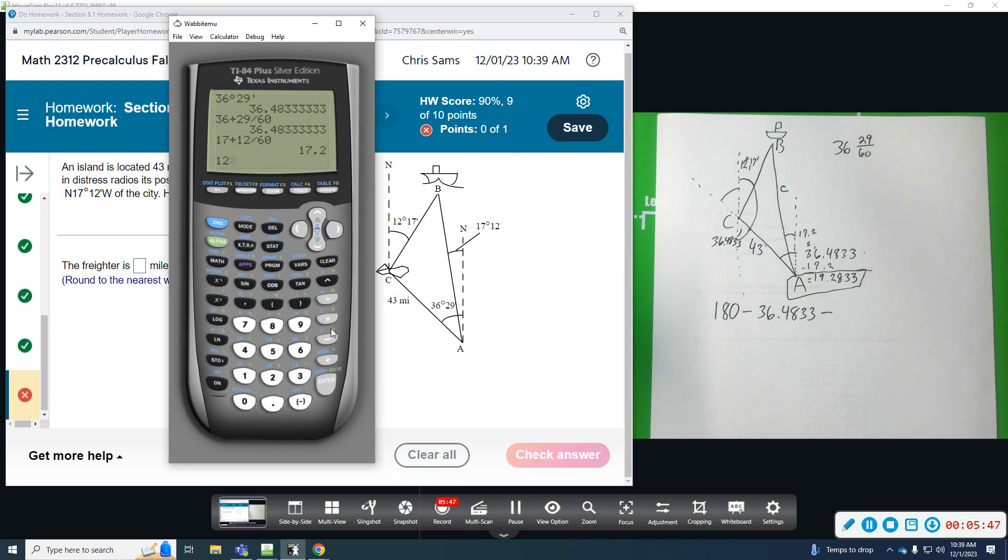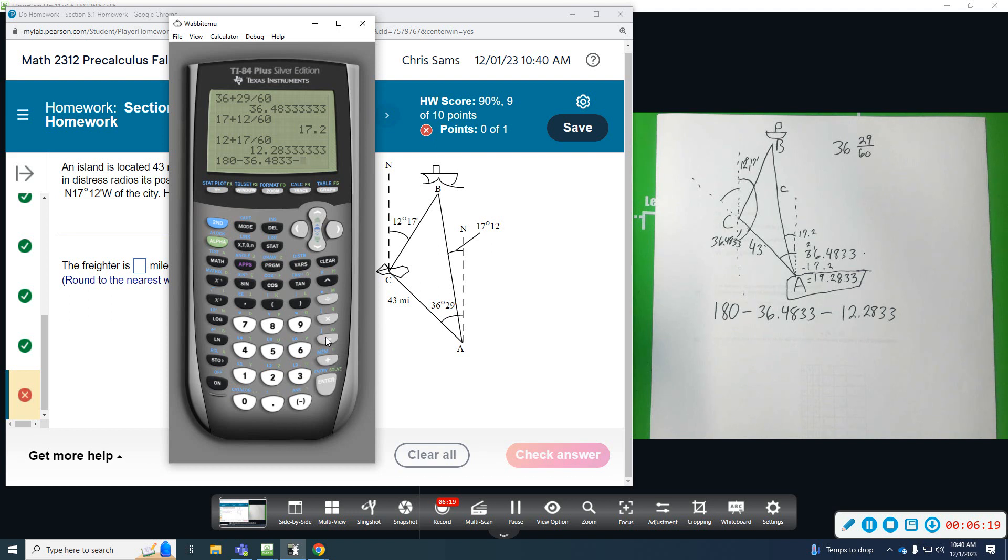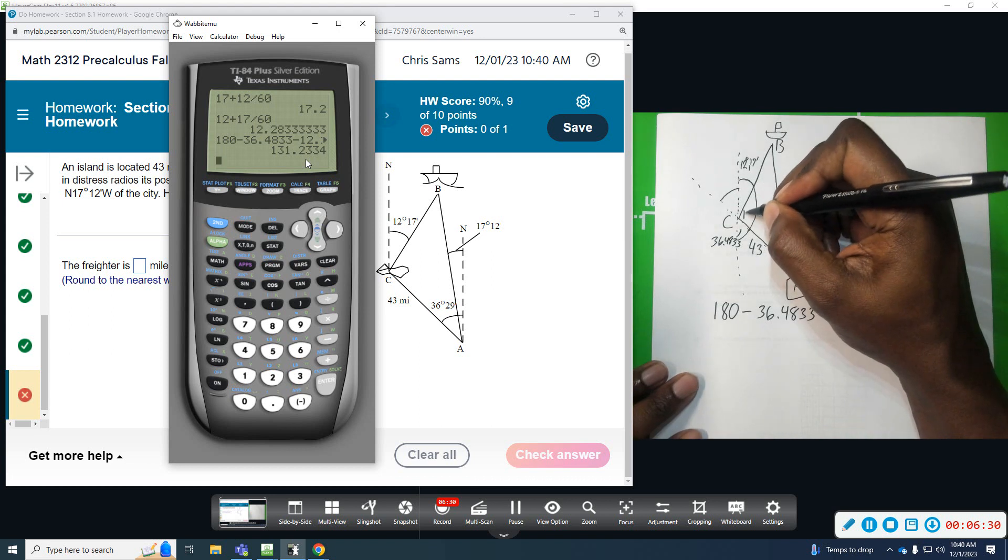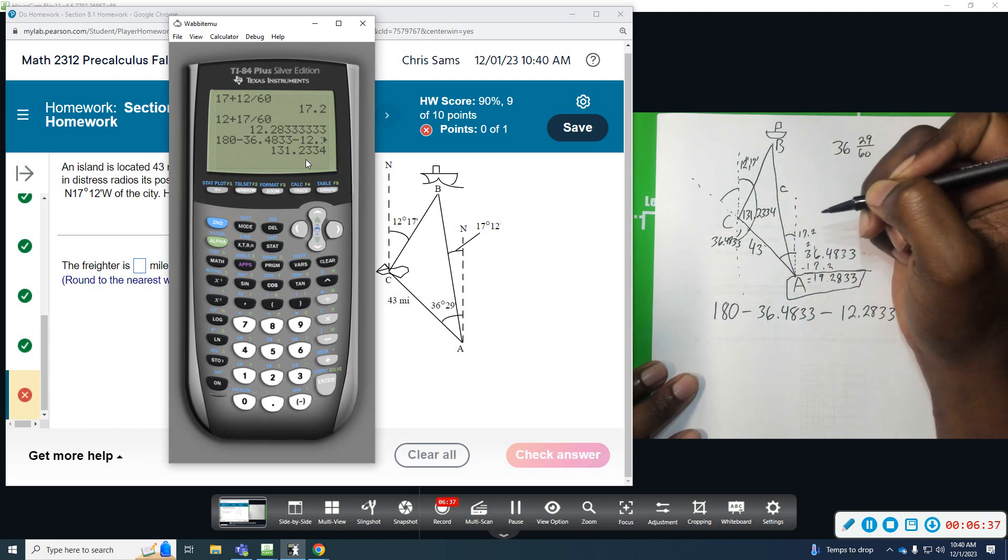12 plus 17 divided by 60, that gives me 12.2833. So, I'm going to do 180 minus those two. 36.4833 minus 12.2833. Okay, that gives me 131, so angle C is 131.2334.